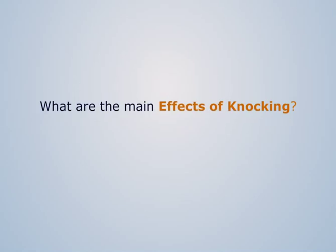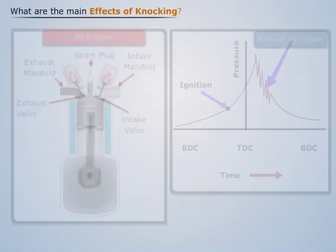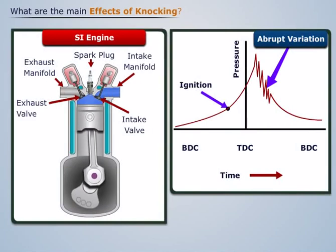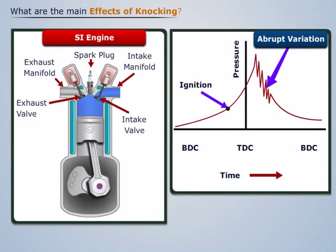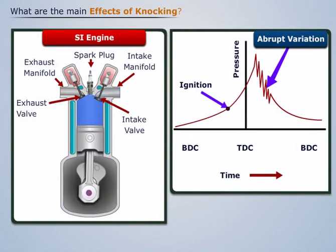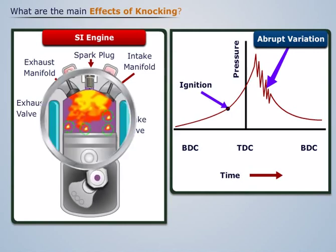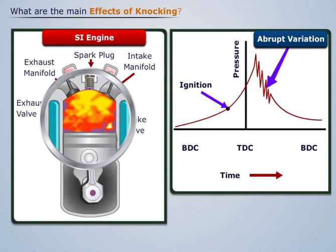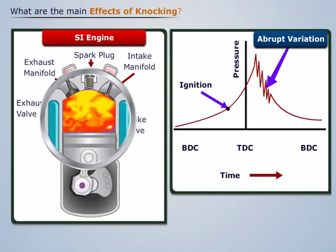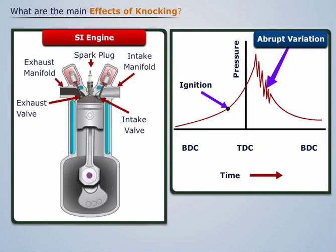What are the main effects of knocking? In an SI engine, during combustion, knocking occurs when small pockets of air-fuel mixture combust due to auto-ignition outside the boundary of the normal combustion front. It has very severe effects on the piston and cylinder walls.